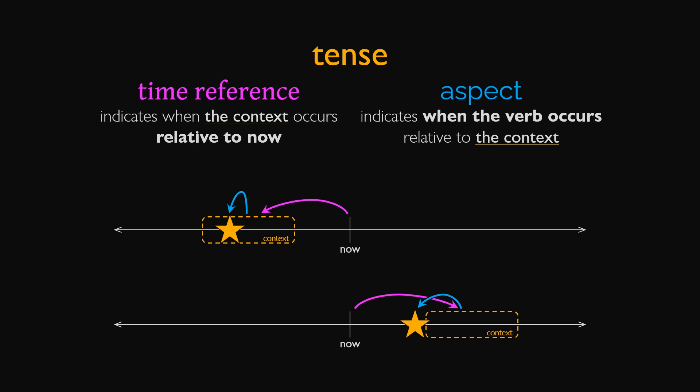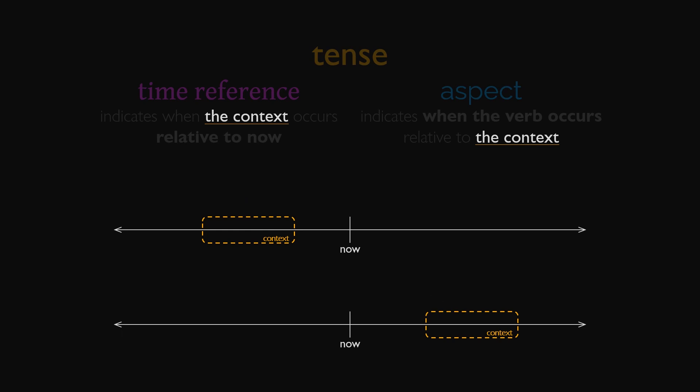In our corresponding part one video, we explained what we mean by context, and we covered the implications of time reference in its three options: past, present, and future. In this part two video, we'll explore aspect.